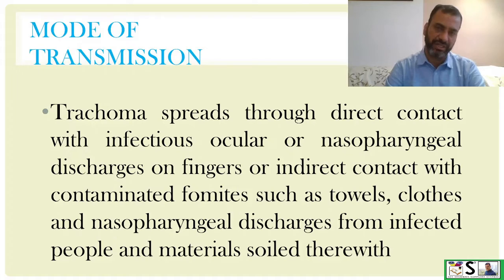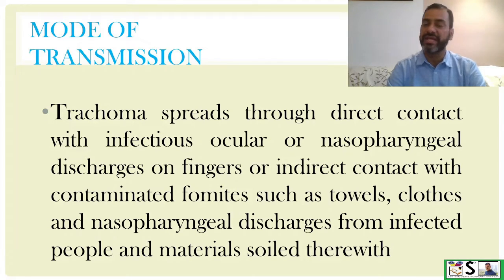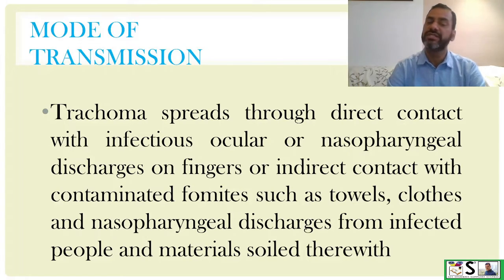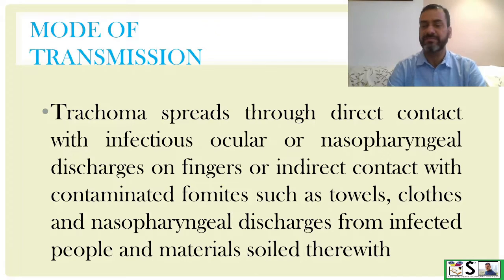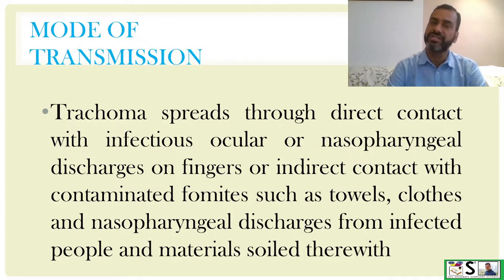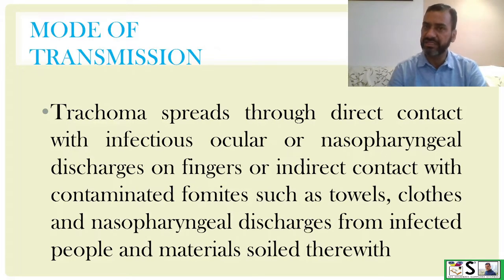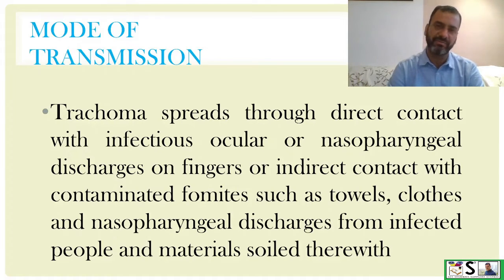Mode of infection — how it transmits? Trachoma spreads through direct contact with infectious ocular and nasopharyngeal secretions or discharge on the fingers, and indirect contact with contaminated fomites such as towels, clothes, nasopharyngeal discharge from infected people, material or soil, handkerchief, and other materials.